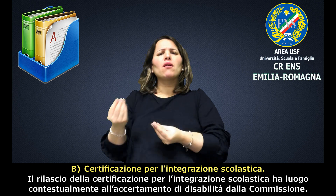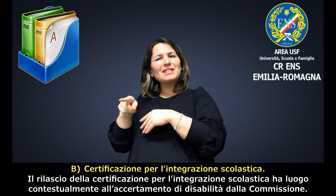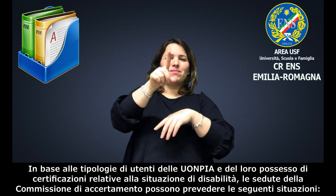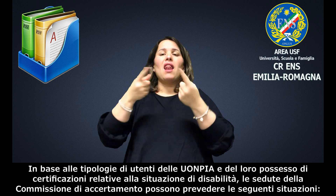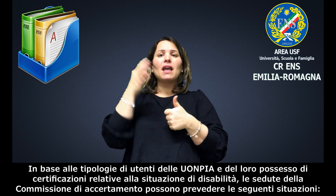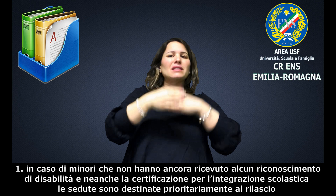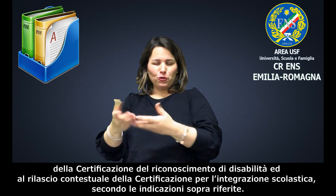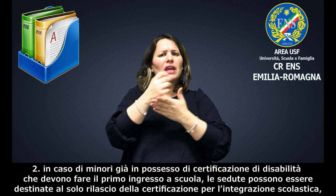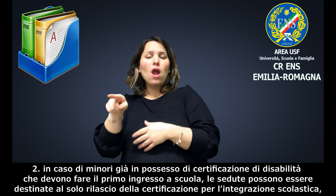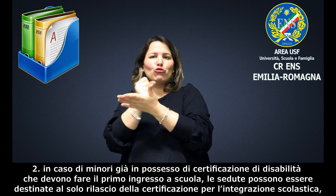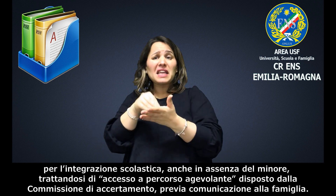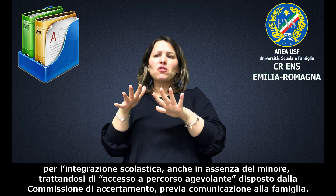Certificazione per l'integrazione scolastica. Il rilascio di questa certificazione è molto importante e ha luogo contestualmente all'accertamento di disabilità della commissione. In base alle tipologie di utenti e del loro possesso di certificazioni relative alla situazione di disabilità, le sedute della commissione di accertamento possono prevedere le seguenti condizioni. In caso di minori che non hanno ancora ricevuto alcun riconoscimento di disabilità e neanche la certificazione per l'integrazione scolastica, la commissione dovrà prevedere prima questi due riconoscimenti. In caso di minori già in possesso di certificazione di disabilità che devono fare il primo ingresso a scuola, le sedute possono essere destinate al solo rilascio della certificazione per l'integrazione scolastica, anche in assenza del minore, trattandosi di accesso a percorso agevolante per l'integrazione scolastica disposto dalla commissione di accertamento previa comunicazione della famiglia.